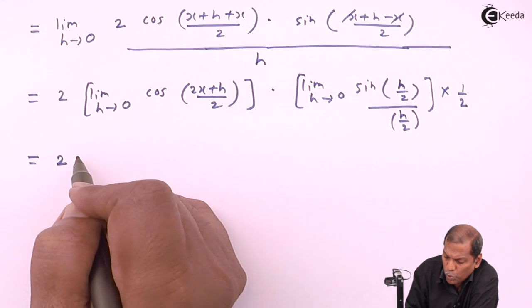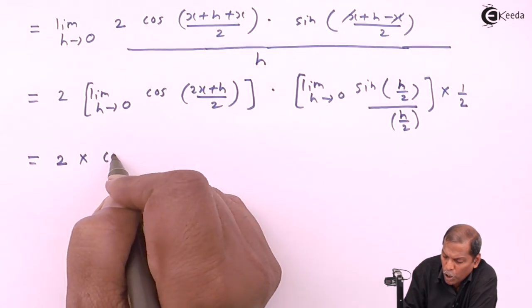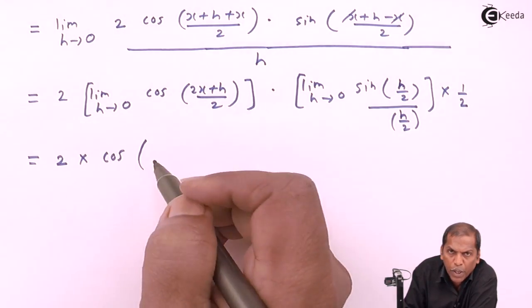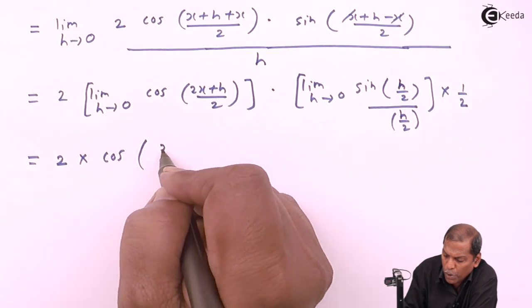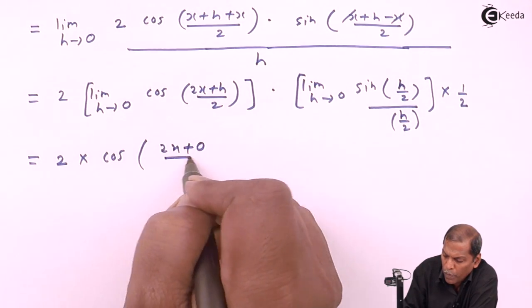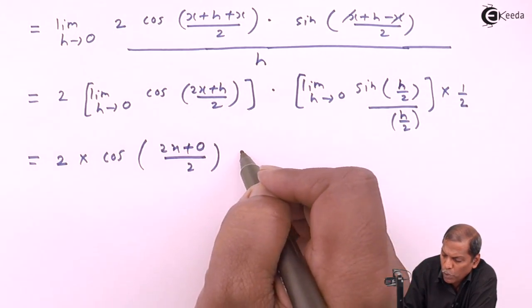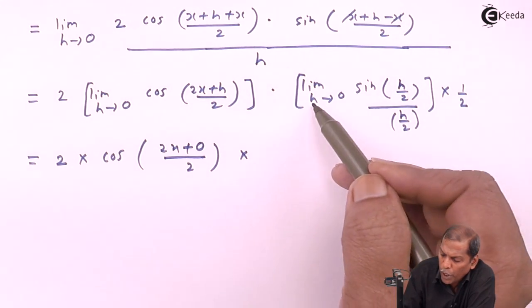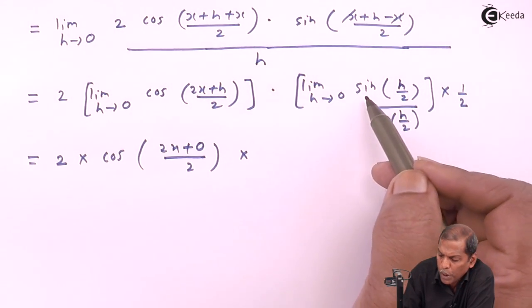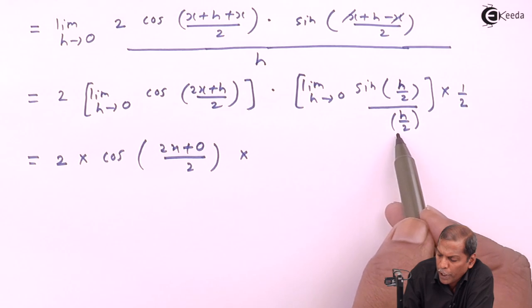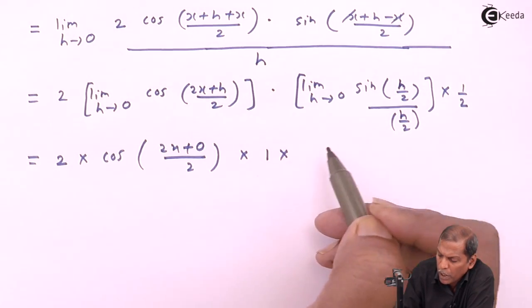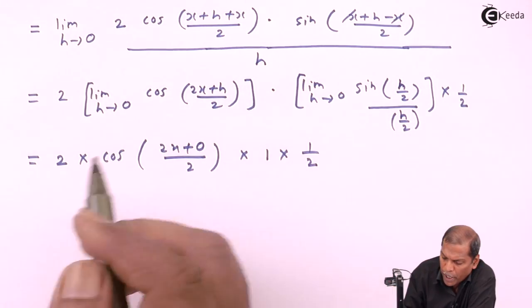So that equal to 2 into cos in bracket, here we substitute limit h as 0, so we get 2x plus 0 divided by 2, into 1 by 2. Now limit h tends to 0, sin of (h/2) upon (h/2) that gives 1, and into 1 by 2.